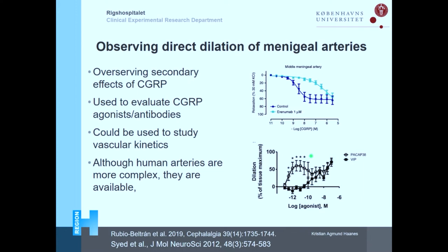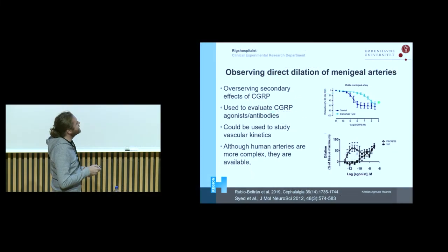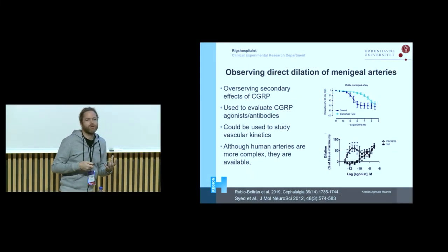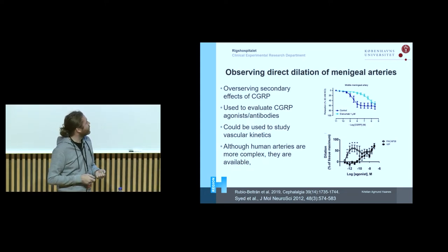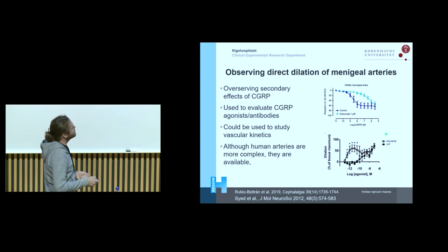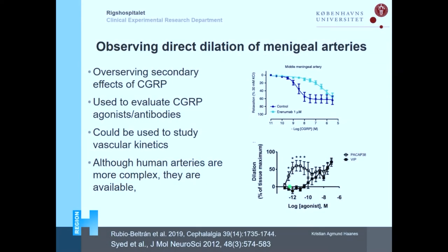These data are from human meningeal arteries, but you can also do it in animals. You can see that erenumab — the antibody binding the CGRP receptor — also shifts the dilation to CGRP, allowing you to study direct vascular mechanisms of compounds we know how they work. Interestingly, regarding PACAP and VIP: some dilation for PACAP is earlier and more sensitive, while for VIP you need a bit longer time. So you can use these animal models and arteries to find out something about receptor kinetics and determine what concentrations would be optimal to use also in human studies.